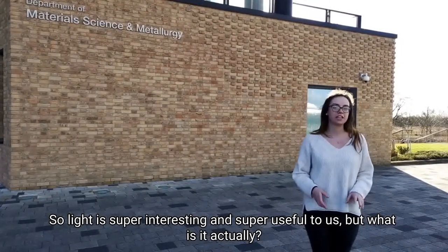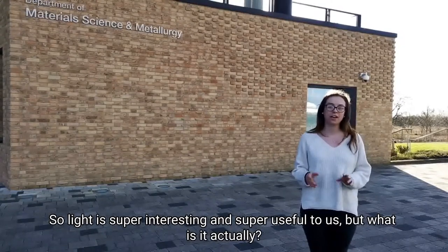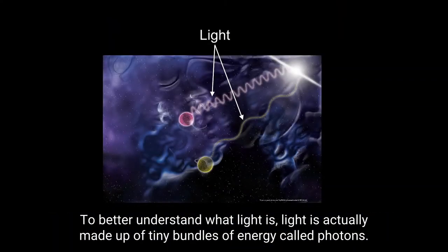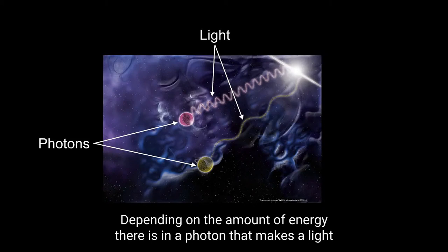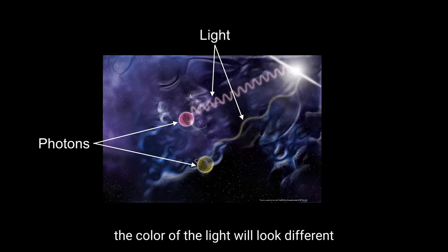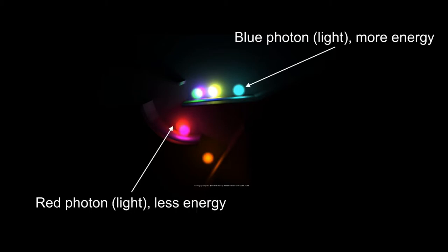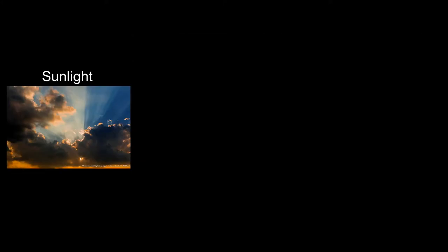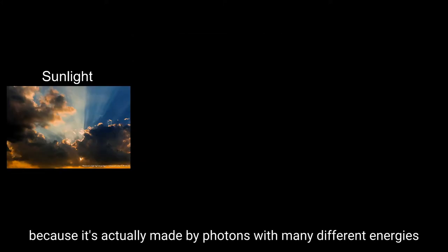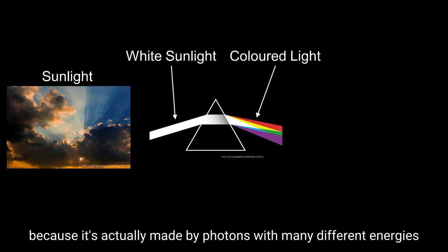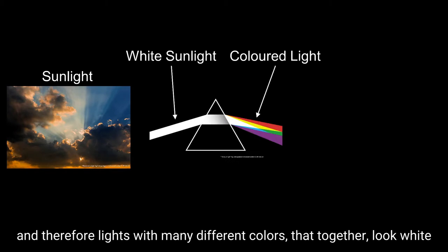So light is super interesting and super useful to us, but what is it actually? Light is actually made up of tiny bundles of energy called photons. Depending on the amount of energy in a photon, the color of the light will look different. For example, there is more energy in the photon that makes blue light than the photon that makes red light. Sunlight looks white but that's deceiving because it's actually made by photons with many different energies and therefore lights with many different colors that together look white.